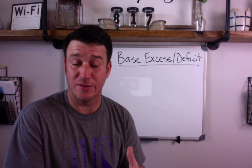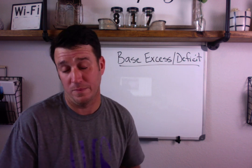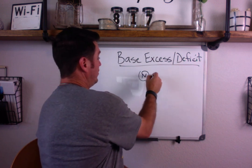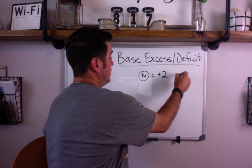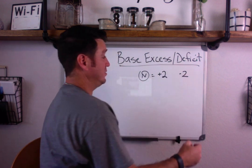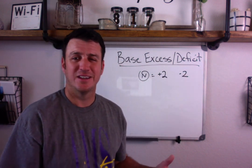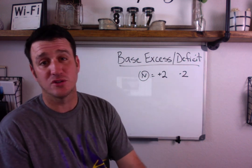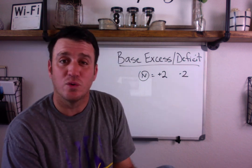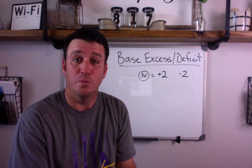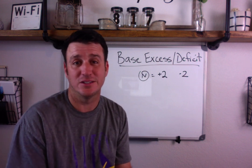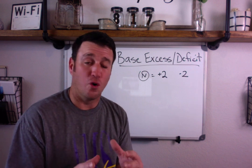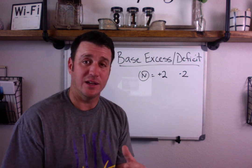The second thing we need to talk about is what is normal. Normal base excess equals plus 2 to minus 2. This makes sense because absolute normal bicarb is 24, and the normal range is 22 to 26 — so plus 2 or minus 2 from 24 gets us to that 22 to 26 range.